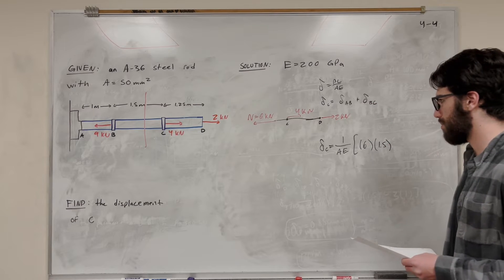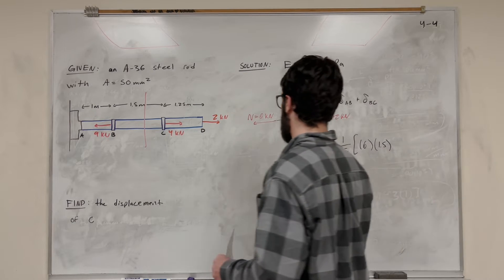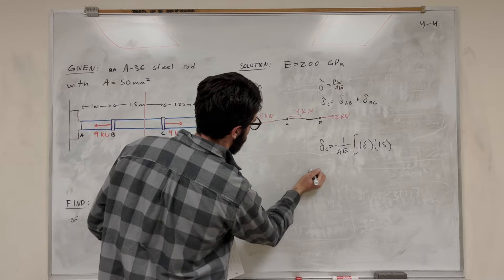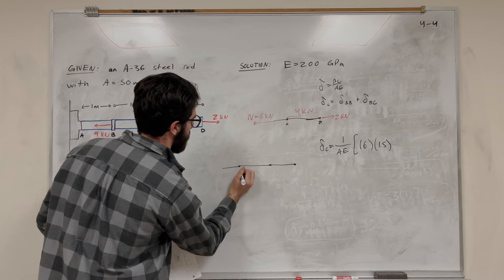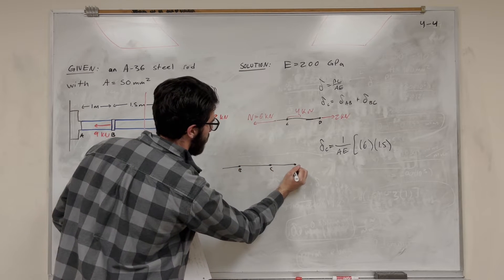So now we need to find out what AB is, the displacement of AB. So how are we going to do that? Well, we're going to draw a similar free body diagram. So, this is B, C, and D.